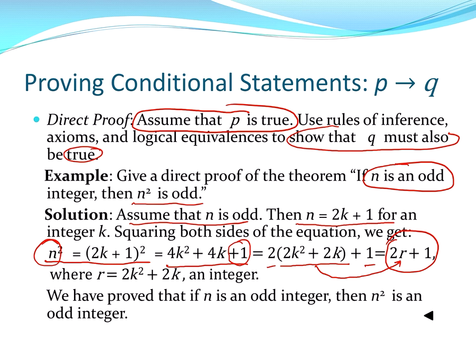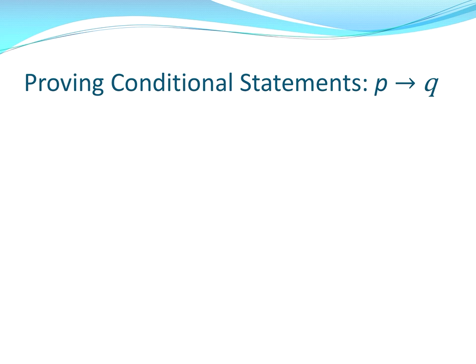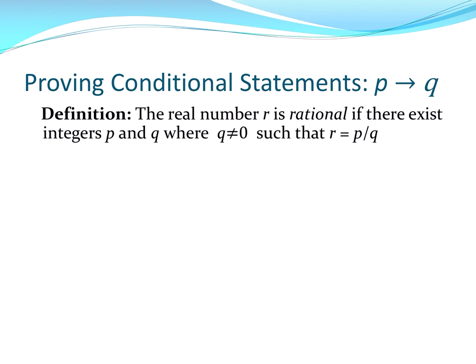All right. So we'll put this little black triangle here. And that means we've completed a proof. We've done what we wanted to do to show that the statement is true. Sometimes you'll see QED. But in this textbook, we use this left-facing black triangle. All right. Let's do another direct proof of a p-implies-q type of theorem.